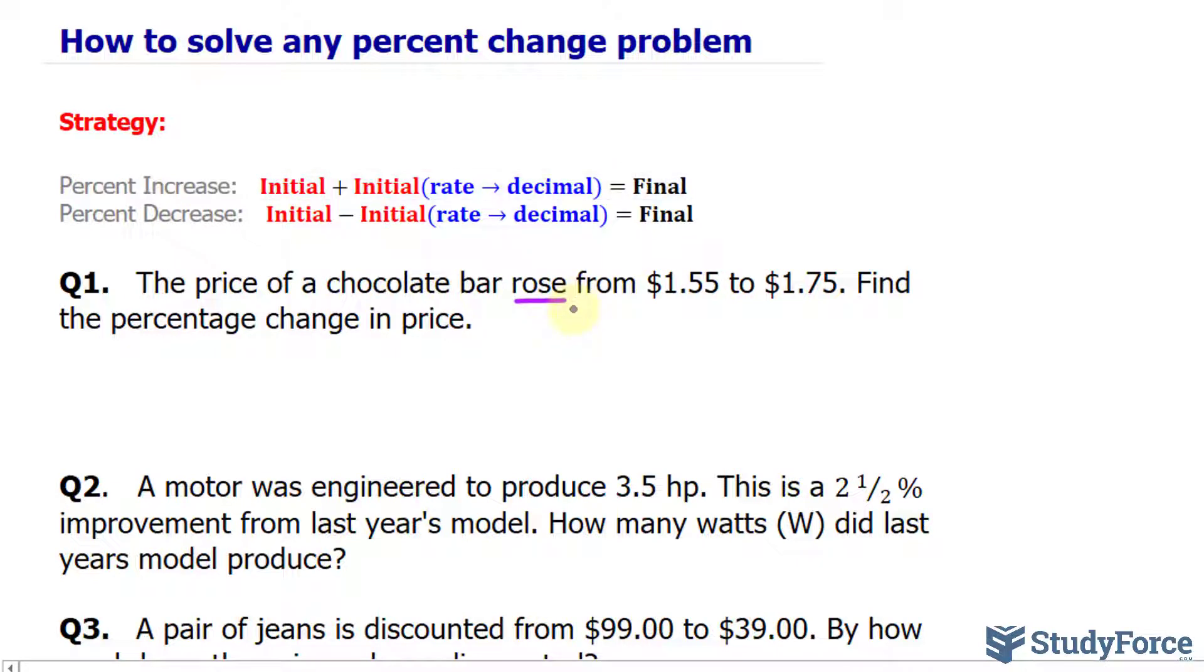Since there's a percent increase, you want to use the first of two formulas. So the initial price was $1.55, and we'll replace initial with $1.55 plus, again, initial being $1.55. The rate is what we're looking for, which is the percent. So I'll replace this part of the formula with x, and that's equal to $1.75.